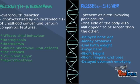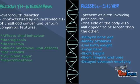Russell-Silver syndrome involves poor growth and is the opposite of Beckwith-Wiedemann. One side of the body appears to be larger than the other. Its symptoms include delayed bone age, kidney problems such as horseshoe kidney, posterior urethral valves, a large head, short height, and short stubby fingers.